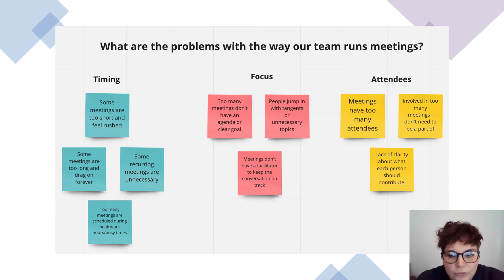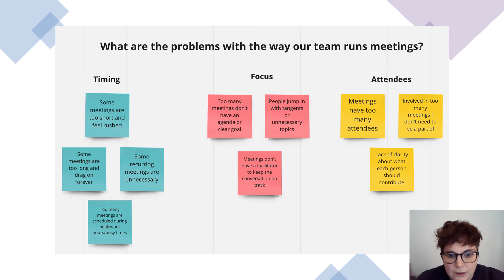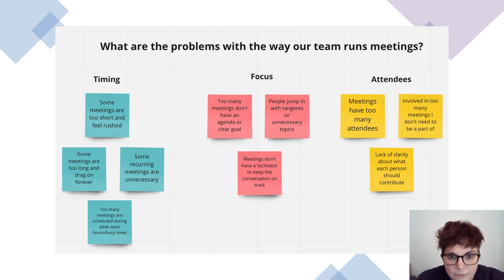If you need ideas for your driver diagram, a good way is using an affinity diagram. You can do it in person or virtually — have a big piece of paper and some post-it notes. It's a group exercise where everybody writes down in silence something they associate with the problem you're trying to solve. Then you theme these, grouping them into themes that will help you think of your primary drivers in relation to the aim you have set.